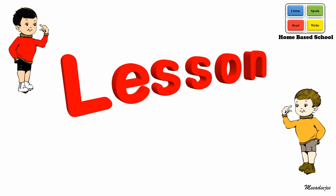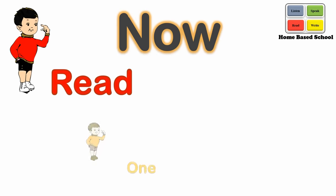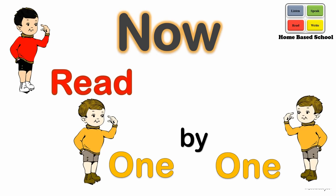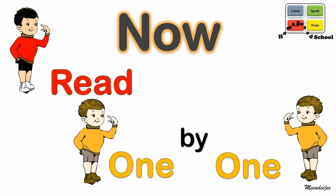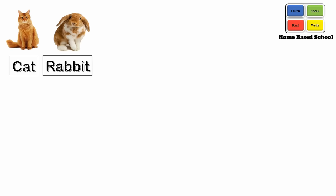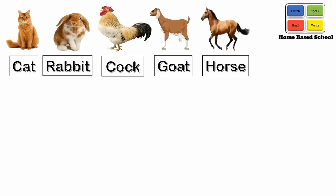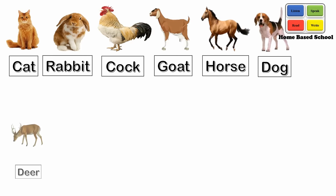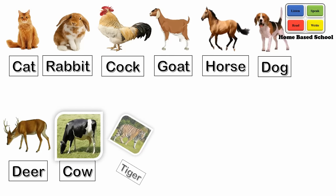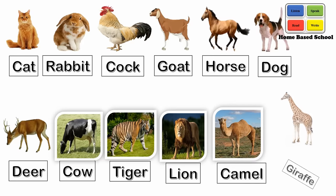Lesson review. Now read one by one: cat, rabbit, cook, god, horse, dog, deer, cow, tiger, lion, camel and giraffe.